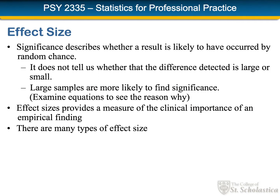The notion of effect size contrasts with the notion of significance. When we say that we found a significant result, what we're really saying is that the sample or samples that we analyzed have results that are unlikely to have occurred by random chance if the null hypothesis is true. But that doesn't tell us whether the difference that we found between the two groups, or later between three groups, is large or small, and it certainly doesn't tell us whether the difference is meaningful.